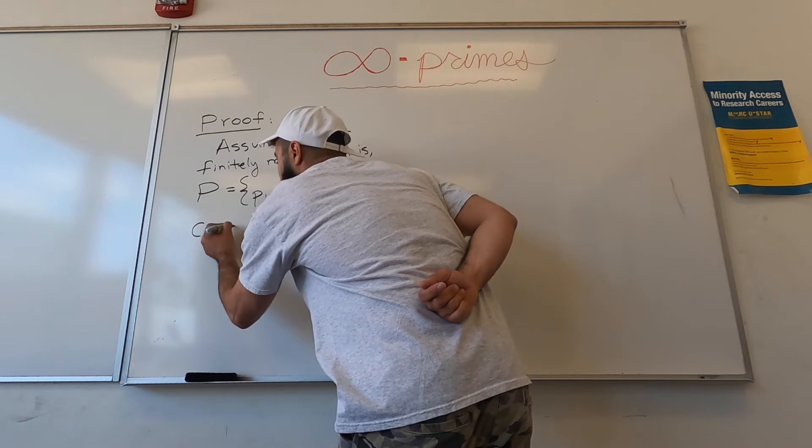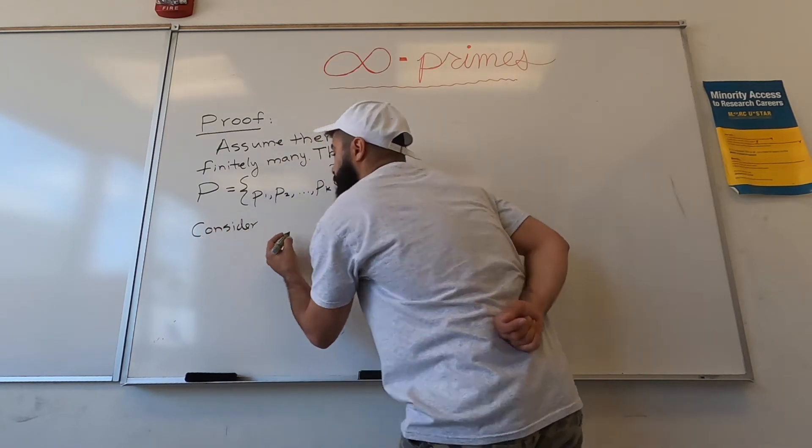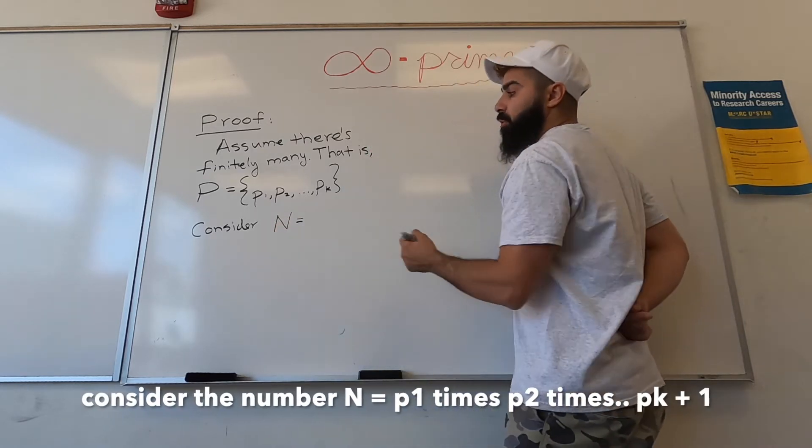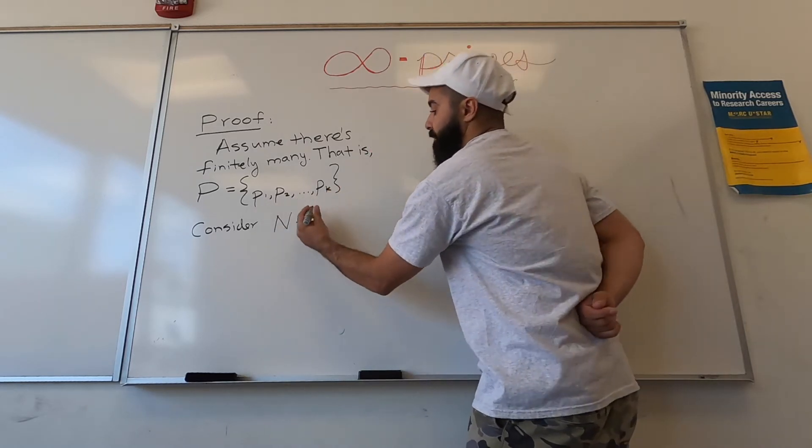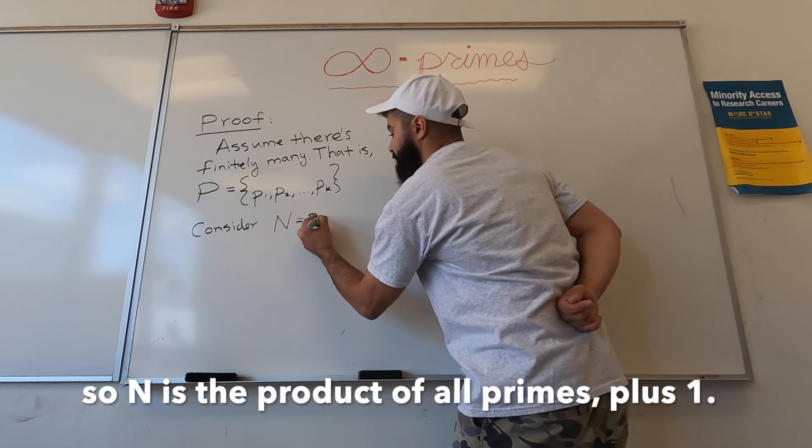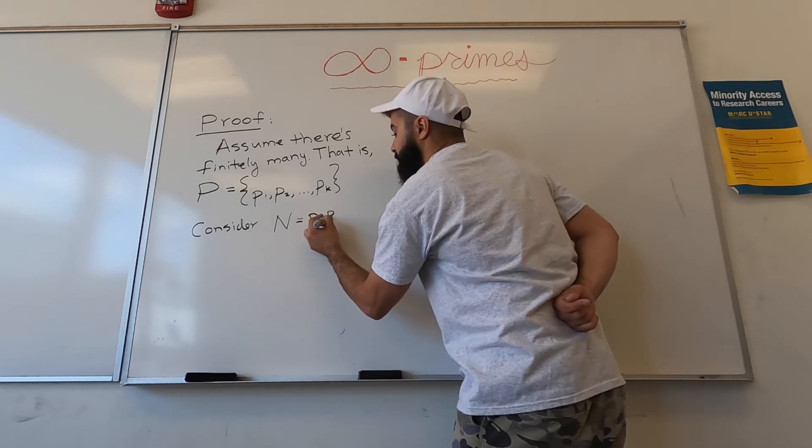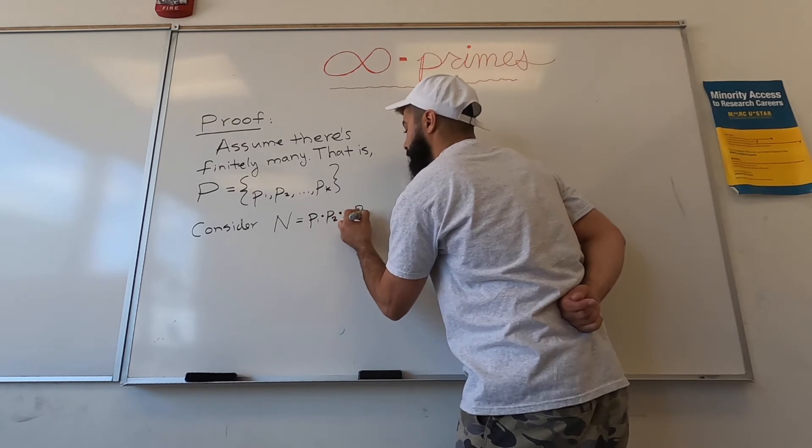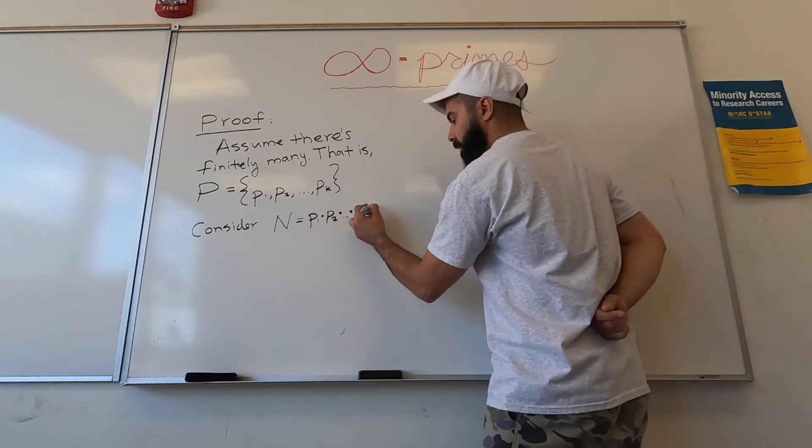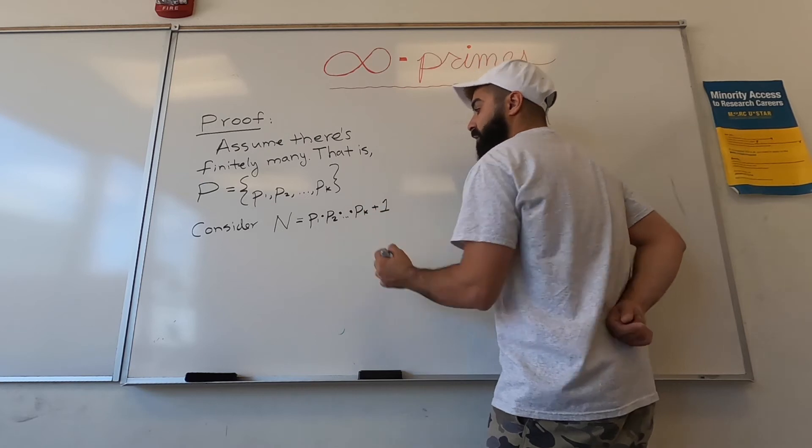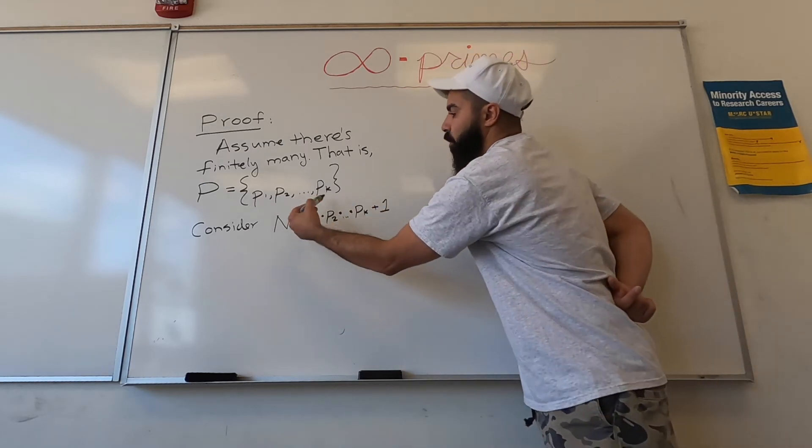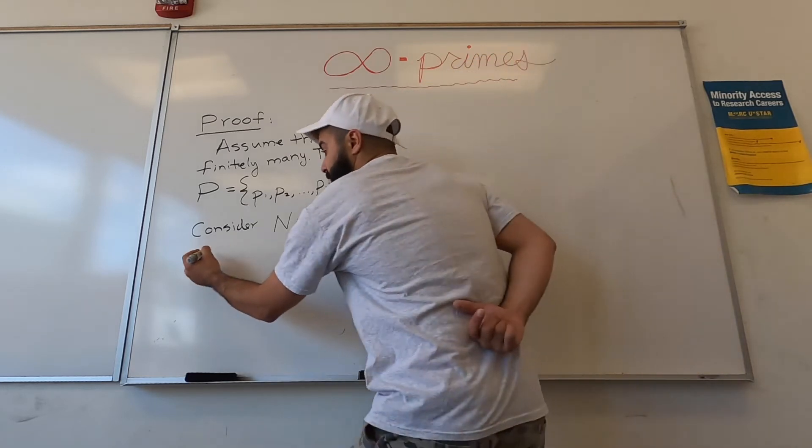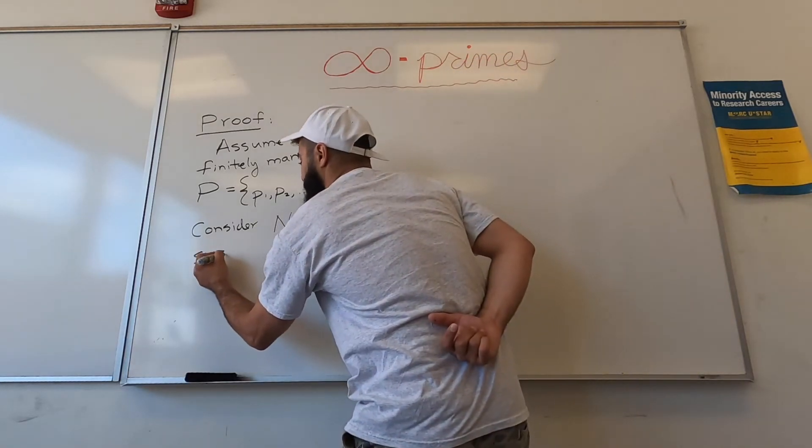Consider the following number. Let's call it capital N, which is equal to - I'm going to times all the primes: p1 times p2 times all the way up to pk, and then I'm going to add one. So it's the product of all the primes in the whole wide world plus one.